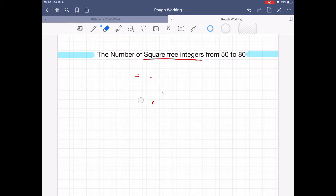Now that we've clarified that, let's just go into it. We just have to find the number of square-free integers from 50 to 80. I'm just going to write them out.